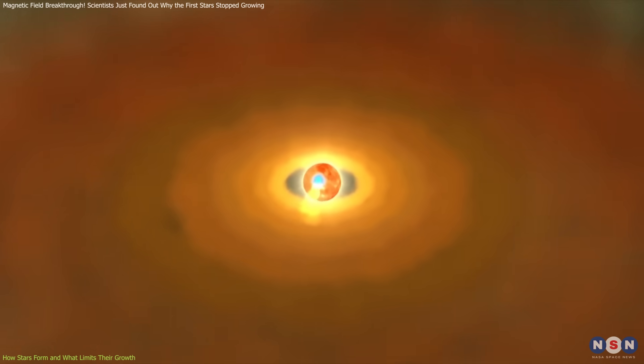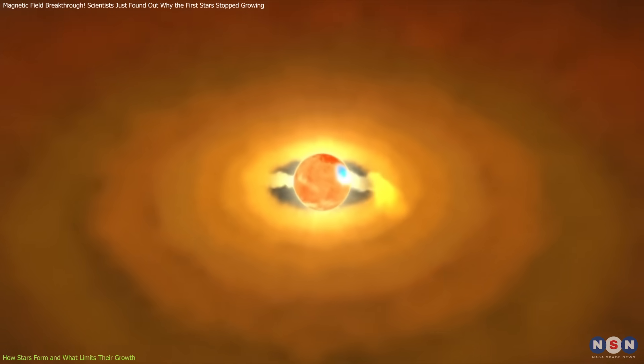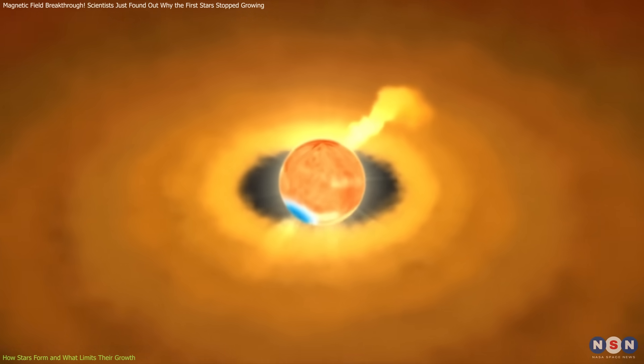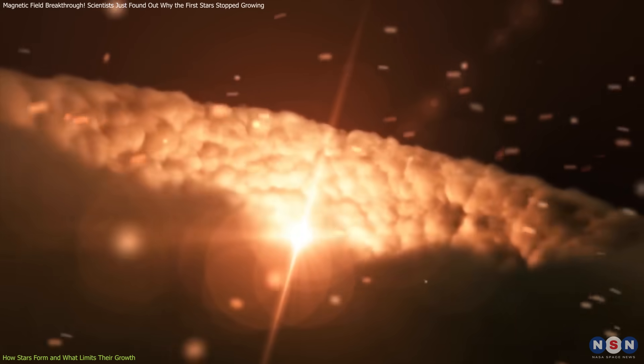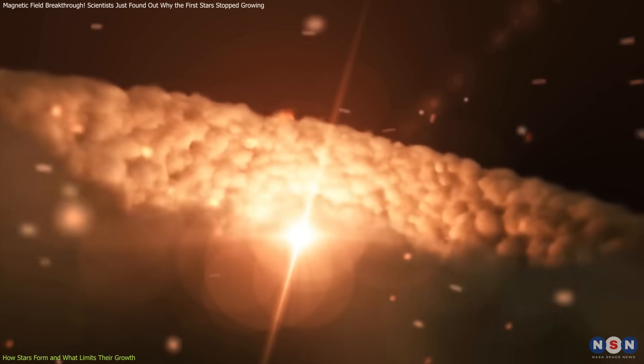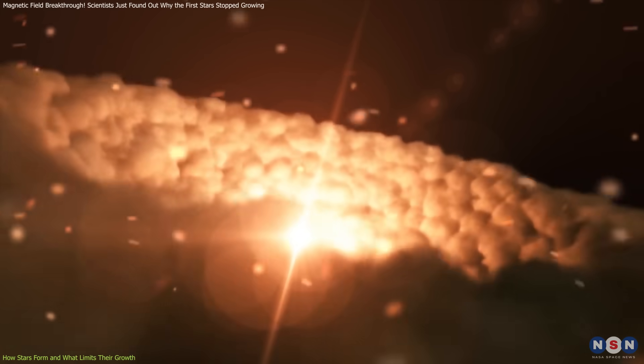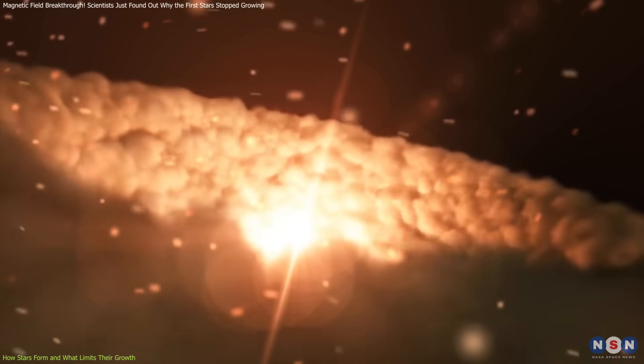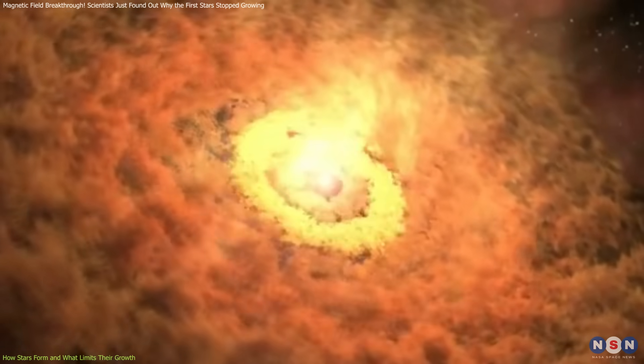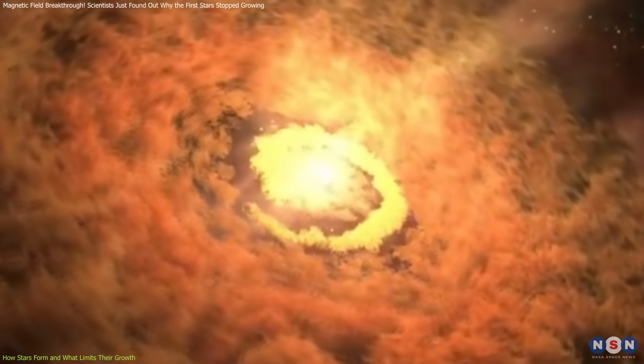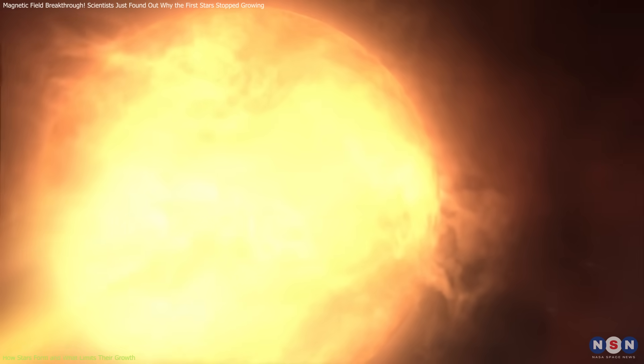However, this growth is not unlimited. Certain forces push back and prevent a star from growing forever. One of the biggest limiting factors is radiative feedback. As a star heats up, it starts emitting powerful radiation. This radiation interacts with the surrounding gas, creating an outward pressure that resists the inward pull of gravity.